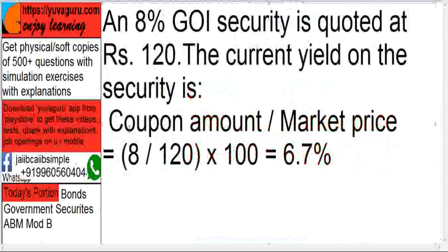Next: an 8% Government of India security is quoted at Rs. 120. The current yield on the security — the current yield formula is coupon amount upon market price, into 100. The coupon amount is Rs. 8 (face value Rs. 100), and the market price is 120.